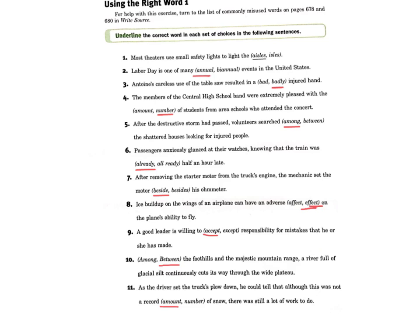And then number eleven, we're going with amount — amount of snow — because snow is an uncountable noun. If you said number of inches, that would be correct as well. So if you have any questions on the worksheet from last night, feel free to email me.